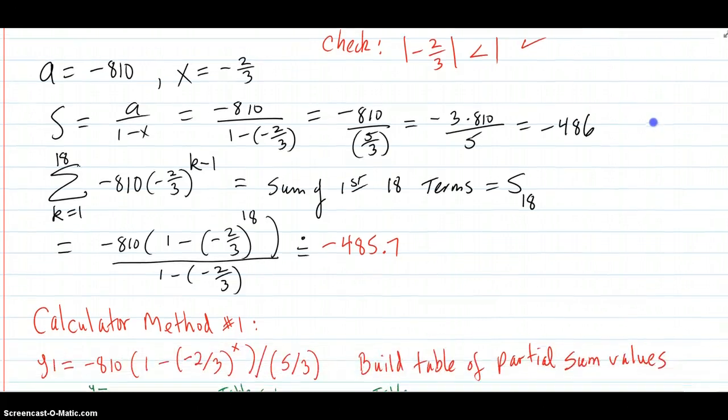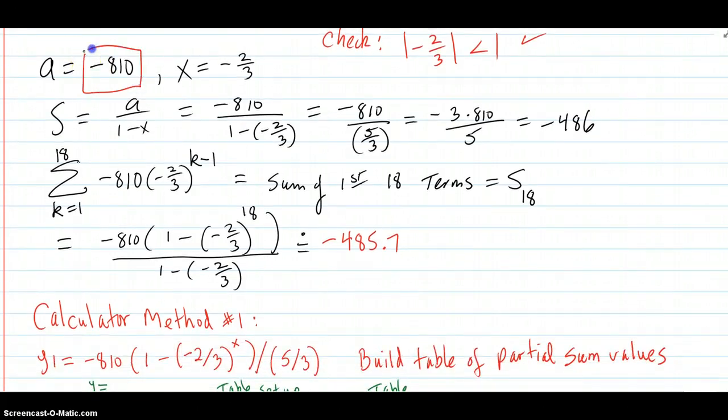So our A term is negative 810. Our constant ratio is negative 2 thirds. Plug it into the sum formula. Comes out negative 486.